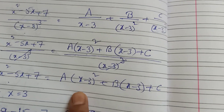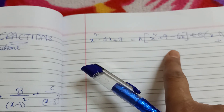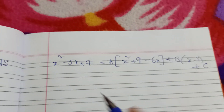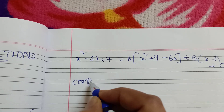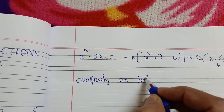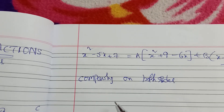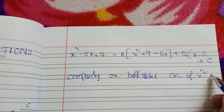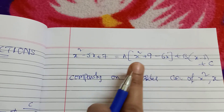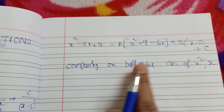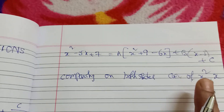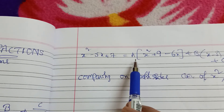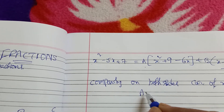We expand A(x minus 3) whole square using a minus b whole square equals a squared plus b squared minus 2ab. Then we add B(x minus 3) plus C. Comparing on both sides: comparing x squared coefficients, only the A term contributes, so A equals 1.